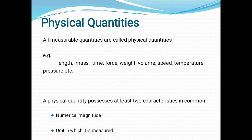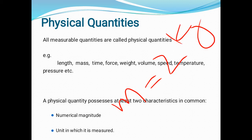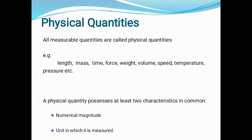Similarly, if you weigh a stone and its mass — noted by m — appears to be two kilograms, then two is the numerical magnitude of mass and kg is the proper unit of the physical quantity mass. In the same way, whenever you measure any physical quantity, you express it in two parts: its numerical magnitude along with the proper unit.